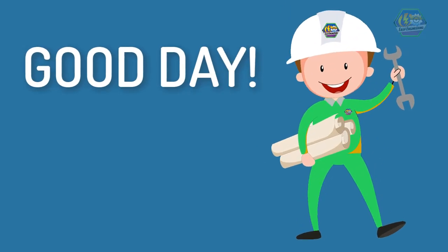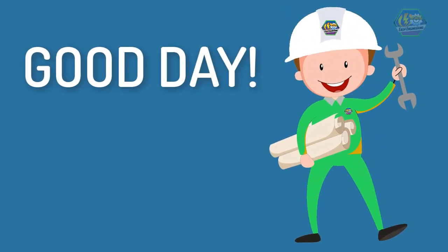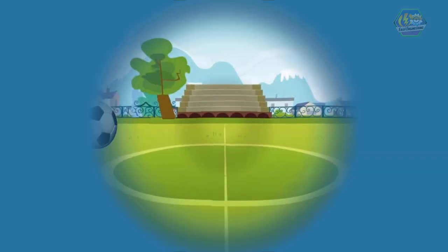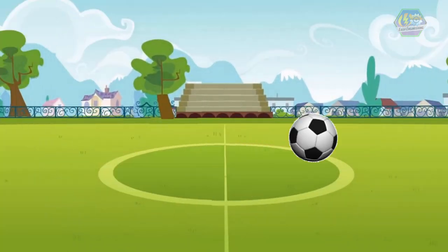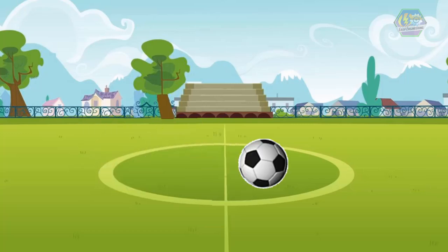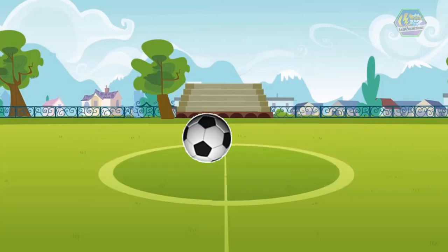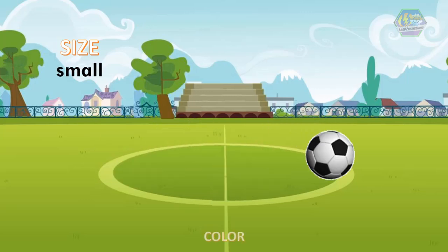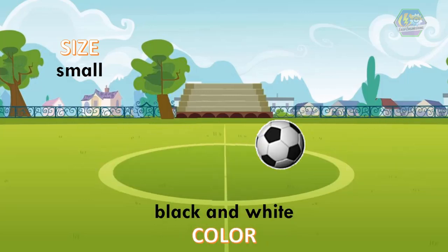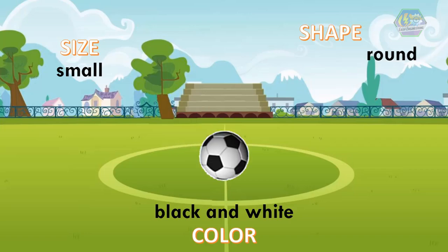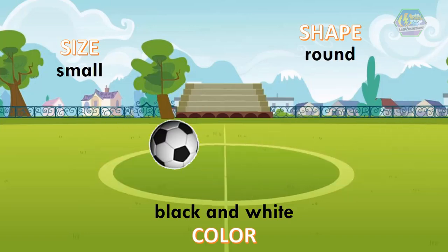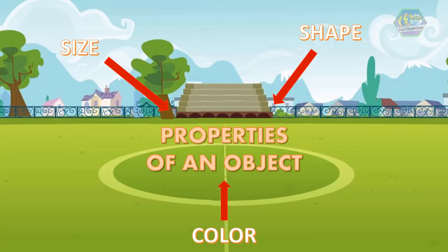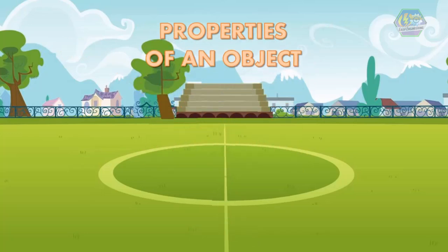Good day learners, this is Easy Engineering. This time we're going to talk about matter. Let us consider this ball. Suppose you're asked to describe the object — you might consider its size and say that it is small, or its color and say that it is white and black, or its shape and say that it is round. These things that you use to describe are properties of an object.